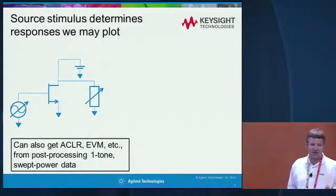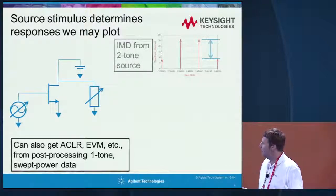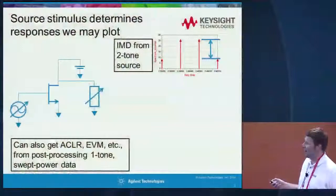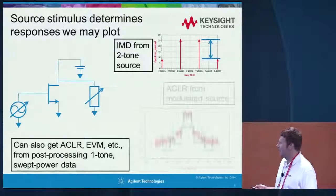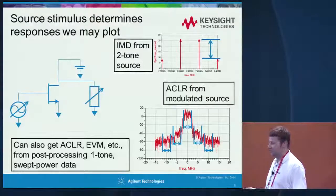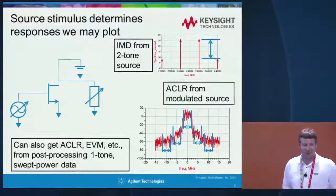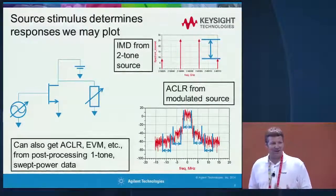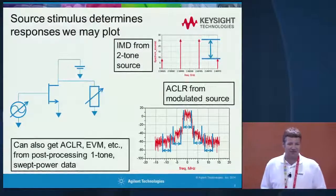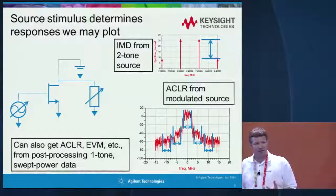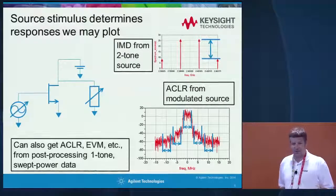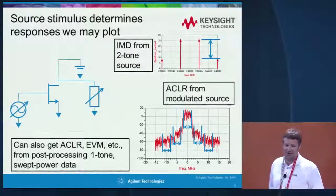The source stimulus also determines what we may want to look at. The easiest and fastest simulation is just a one-tone simple power sweep simulation, but we can get more data if we do two tones — then we can get something like IMD. With most practical amplifiers, the most realistic input source is a modulated source. We can run an entire modulated signal through the amplifier, change all the loads, and look at the output spectrum — such as adjacent channel leakage ratio. The downside is that these transient-type simulations take a long time. However, if you don't have too many memory effects, you can get good estimates of these output spectral measurements from just a simple one-tone simulation.